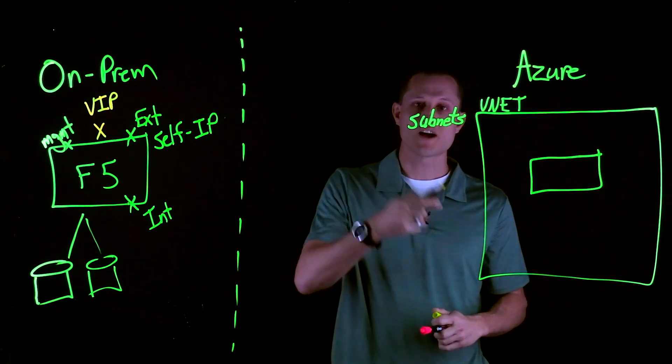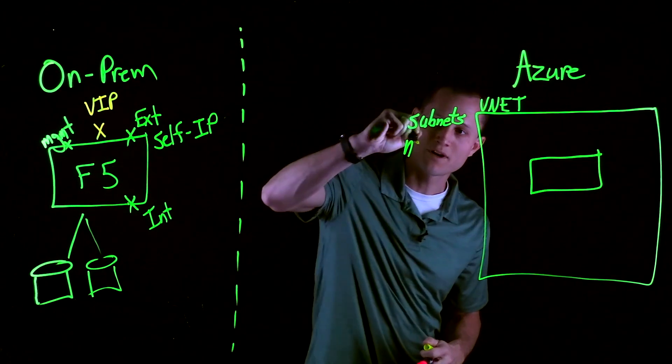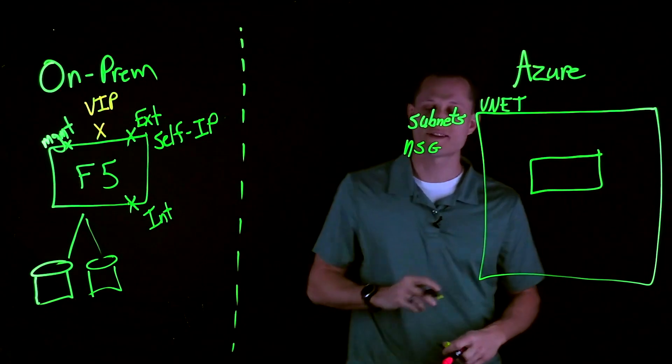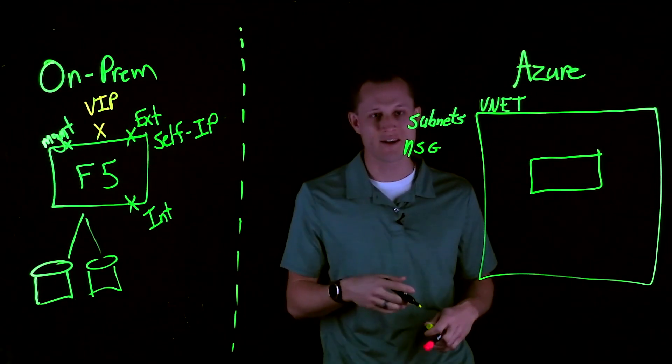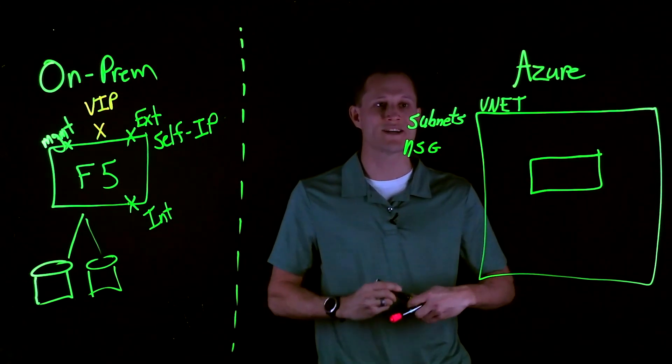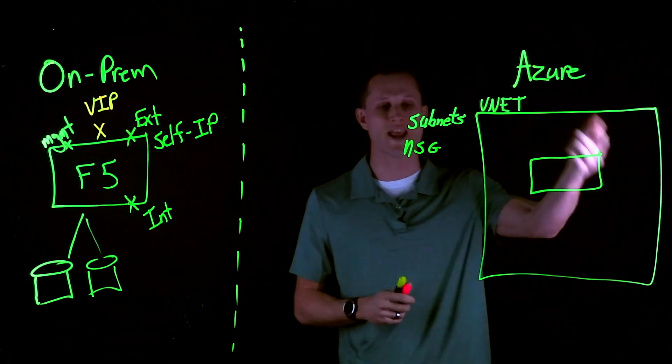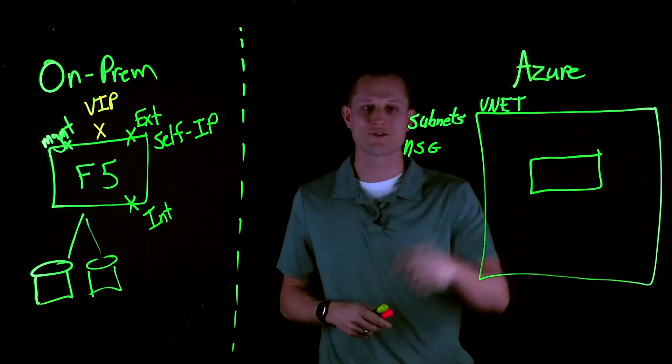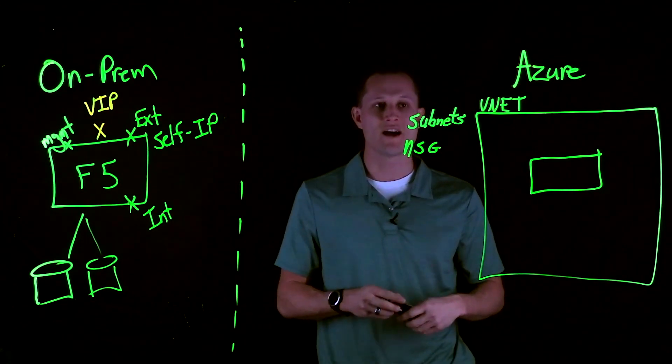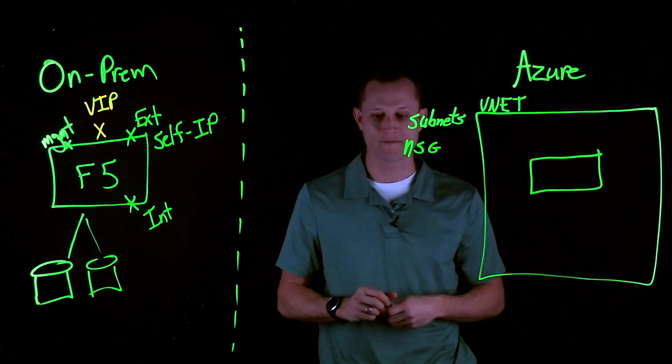The next concept we want to talk about is a network security group. This is our basic ACL for inbound and outbound. This is very important because as you are trying to pass traffic in and out, say it's port 80 or name your port, we want to make sure that our inbound and outbound ACLs are open to allow that traffic.